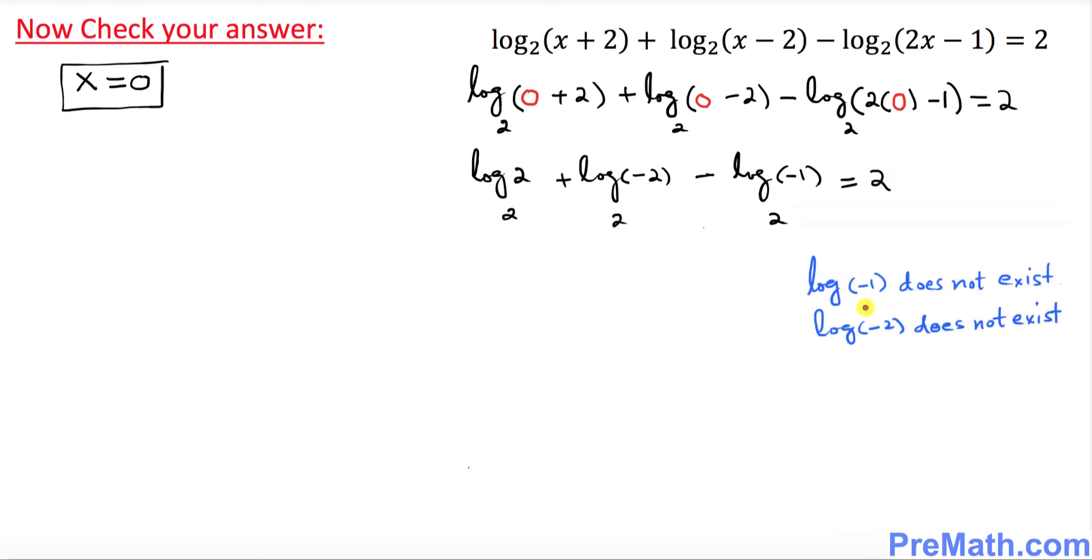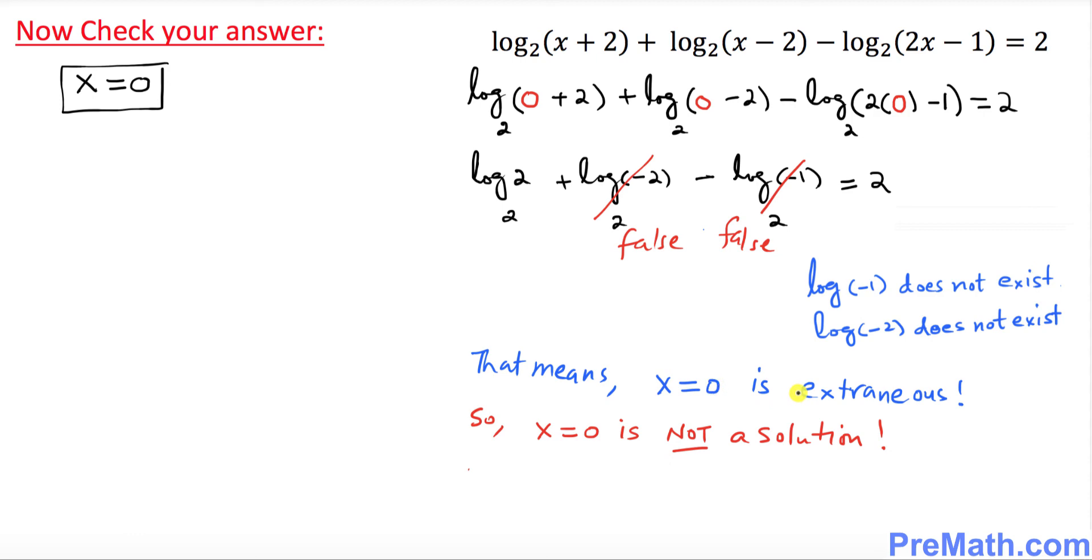However, log of negative 1 and log of negative 2, they are undefined. They do not exist. That means these two statements are false. So that really means X equal to 0 is extraneous. Thus X is 0 is not a solution.